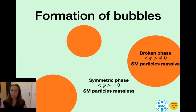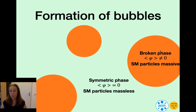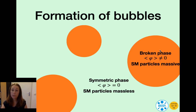Let us think about the electroweak phase transition for now. If this would be a first-order phase transition, then bubbles form in which the Higgs has obtained its non-zero vacuum expectation value and the standard model particles have become massive. These bubbles expand and collide, and in this process a gravitational wave signal could be formed, leading to a stochastic background of gravitational waves.